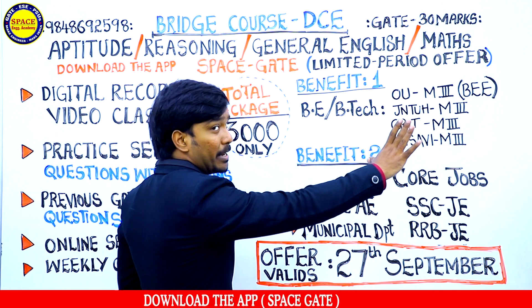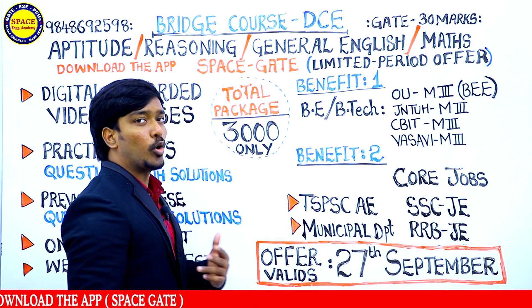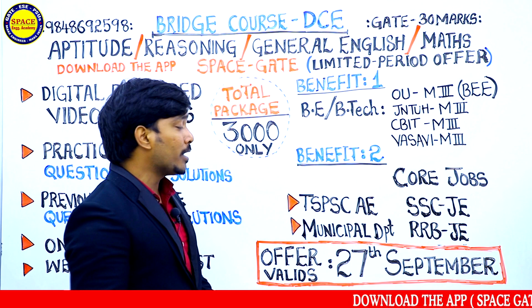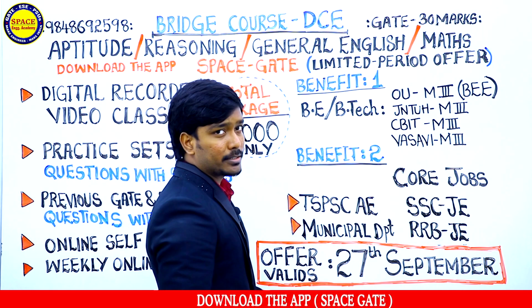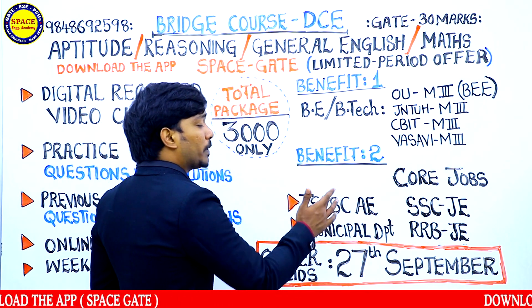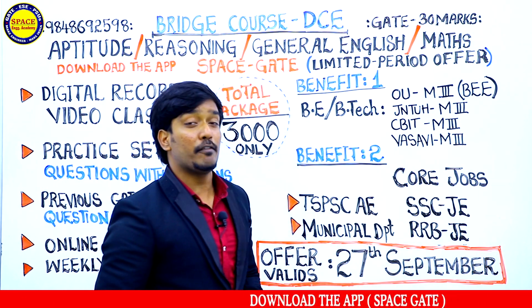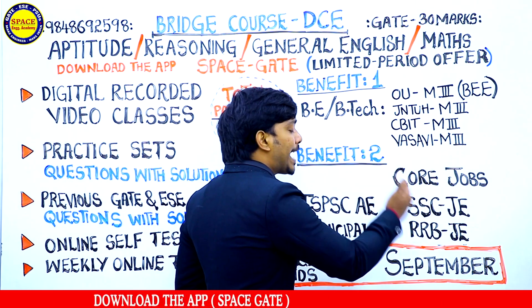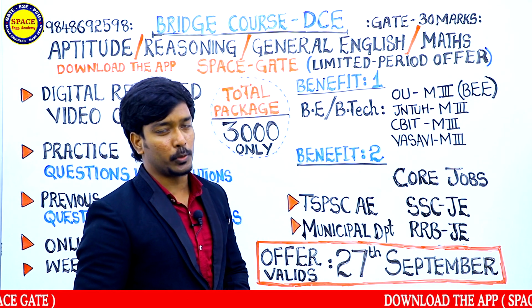The first benefit is academics; the second benefit is core jobs. Civil core jobs — TSPSC (Telangana State Public Service Commission) assistant engineer job, municipal department jobs, Staff Selection Commission — every year two times expected — as well as RRBJE junior engineer job.